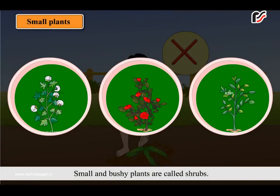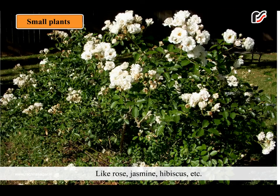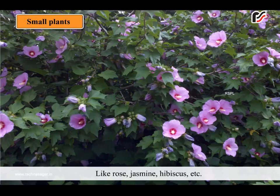Small and bushy plants are called shrubs. They are bigger than herbs and have stems of wood, like rose, jasmine, hibiscus etc.